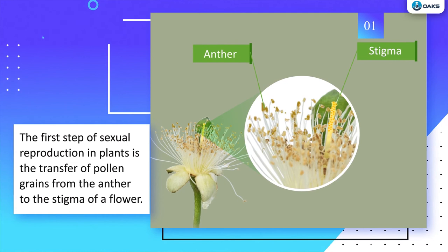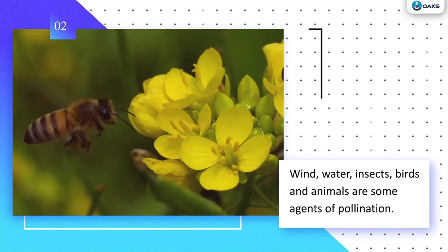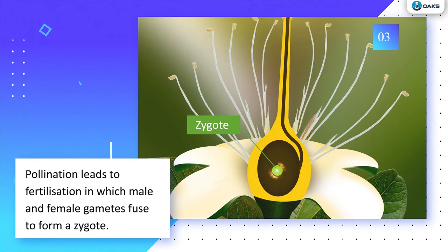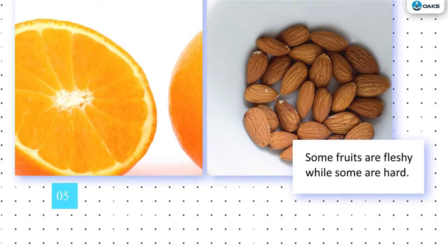The first step of sexual reproduction in plants is the transfer of pollen grains from the anther to the stigma of a flower. Wind, water, insects, birds, and animals are some agents of pollination. Pollination leads to fertilization, in which male and female gametes fuse to form a zygote. After fertilization, the sepals and petals fall off and the ovary ripens to become fruit. Some fruits are fleshy while some are hard. Thank you.